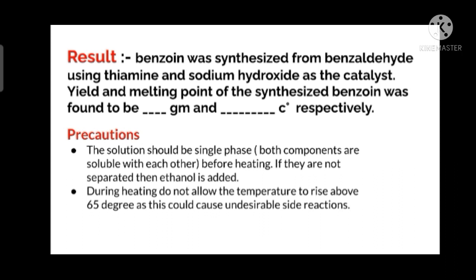The first precaution is the solution should be single phase. Both components are soluble with each other before heating. If they are not separated, then ethanol is added. The second precaution is we should not heat it more than 65 degrees Celsius, just because it can cause undesirable side reactions. That is why we should restrict our temperature to 65 degrees. These are the two precautions that we need to follow while performing the experiment.